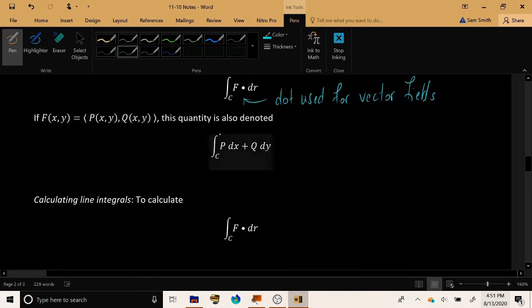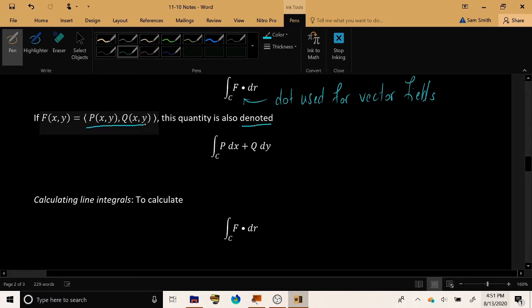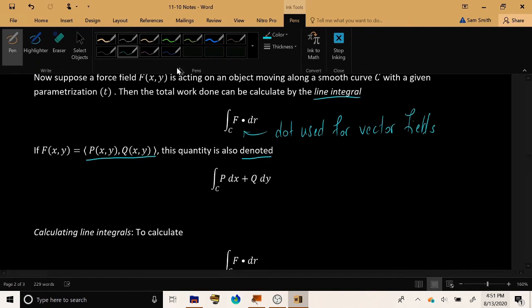So you will see this notation for a line integral with F · DR. But you will also see this notation sometimes used for a line integral, where here are the component functions of the vector field. And then here is the line integral, integral over C, p dx plus q dy. P dx plus q dy is an alternate notation for the line integral of the vector field F.